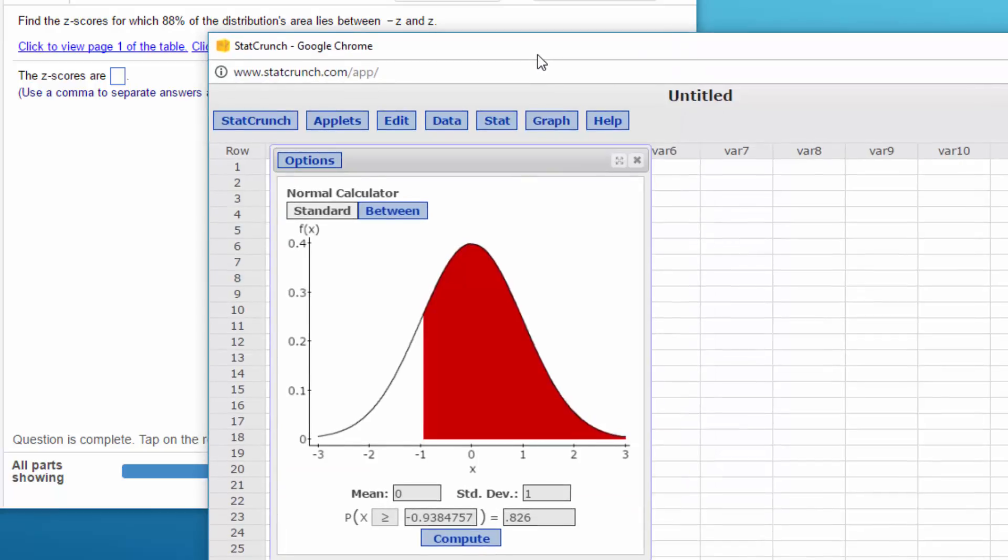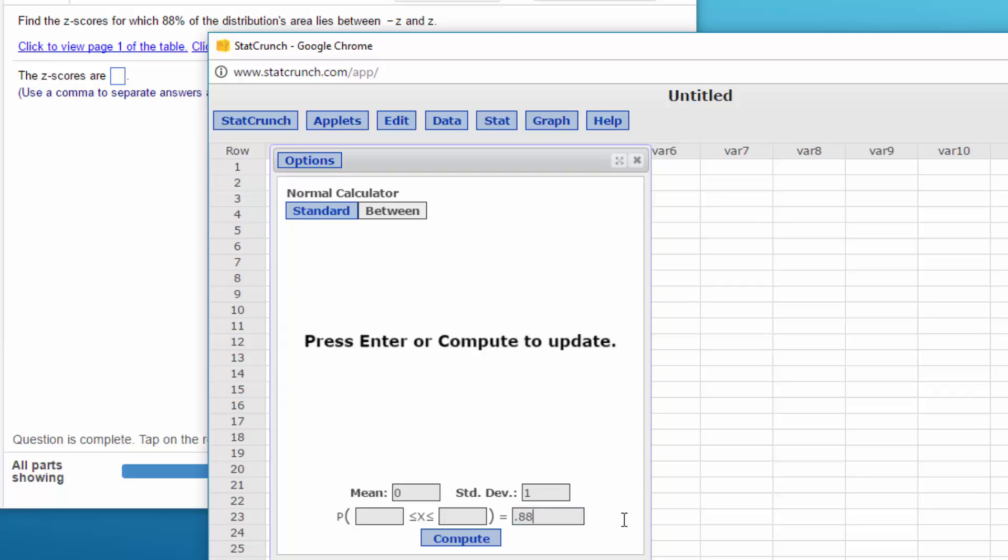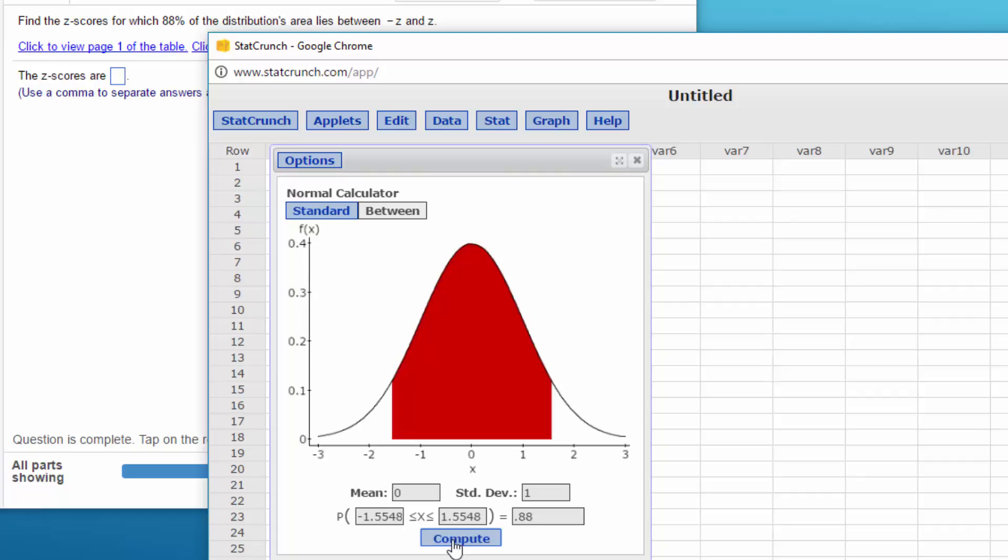So let's go again back to our StatCrunch calculator, and this time we want to click on the between, and we want the area between to be 0.88. Click on compute, and that gives us -1.55 to +1.55, which would be the answer.